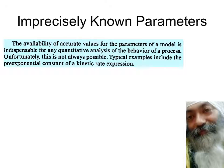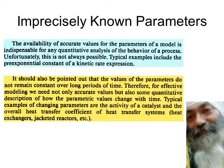Coming to imprecisely known parameters: the pre-exponential constant K0, the overall heat transfer coefficient U, and other parameters are not exactly known to us. These parameters also keep changing with time and we need to somehow incorporate these changes. This includes the activity of catalysts and the overall heat transfer coefficient of heat exchangers or jacketed reactors, which deteriorate with time — all of which need to be known precisely so the model behavior matches reality.